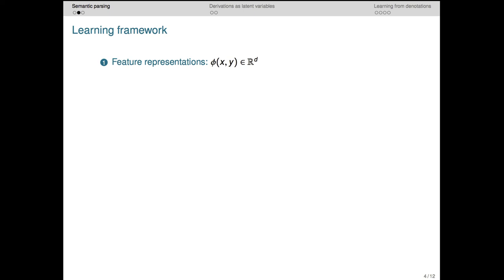For instance, we could say something like dimension i is a 1 if the input x contains the word minus. Or we could say dimension j counts the number of unary predicates in the input structure.